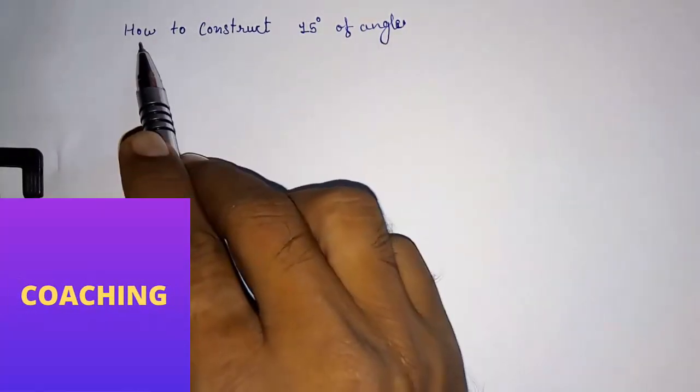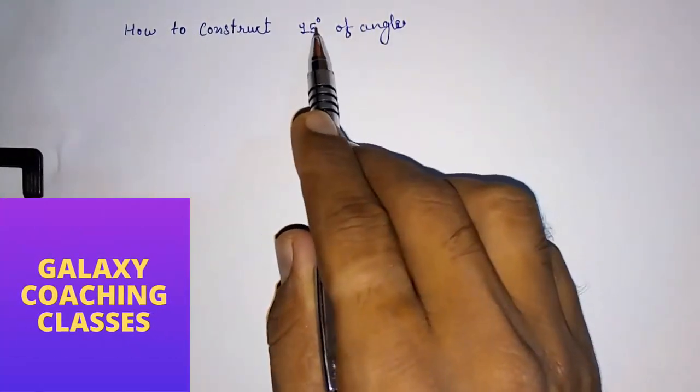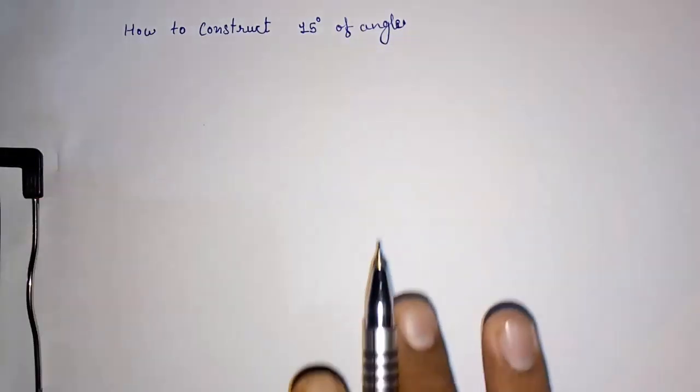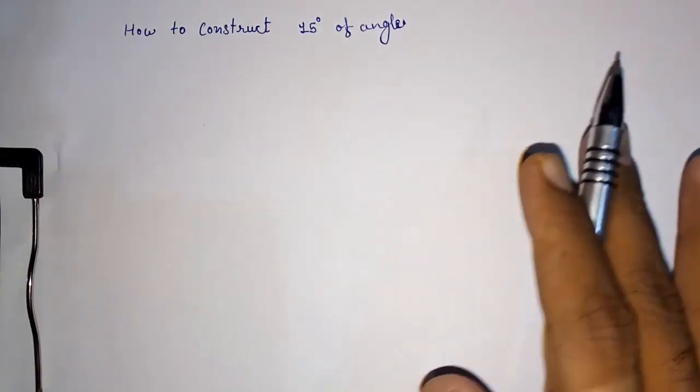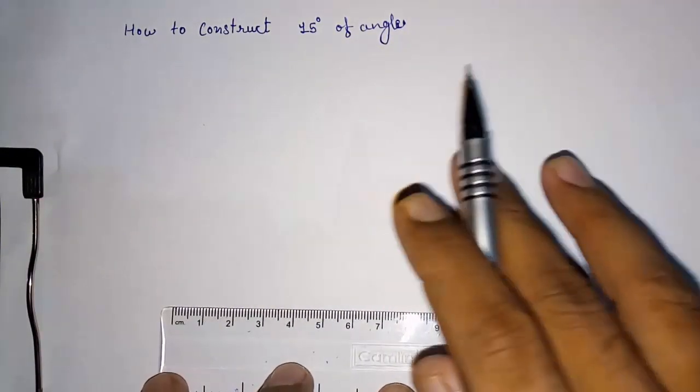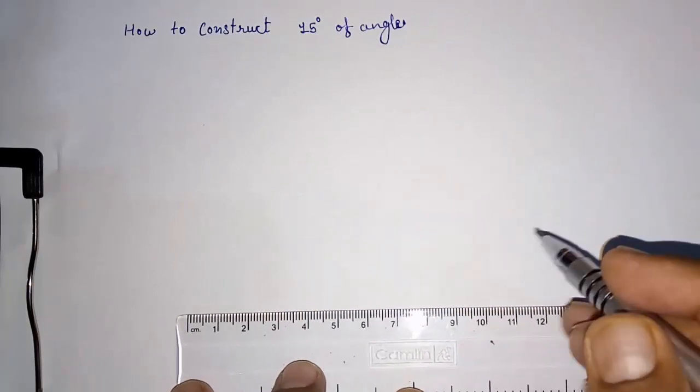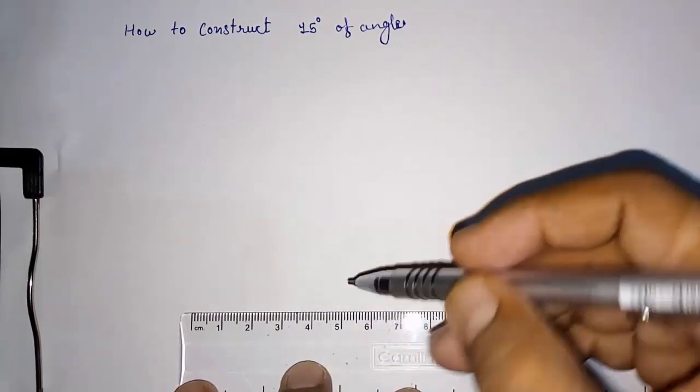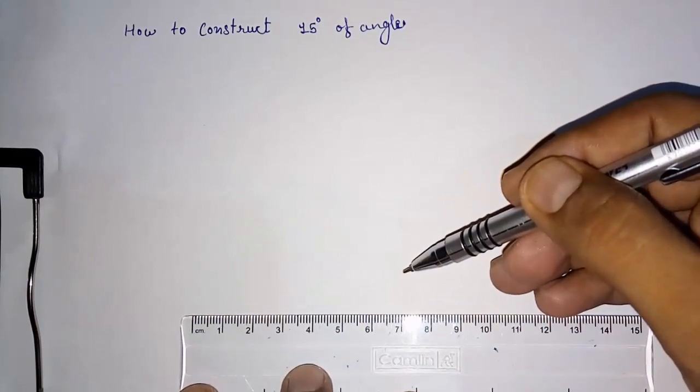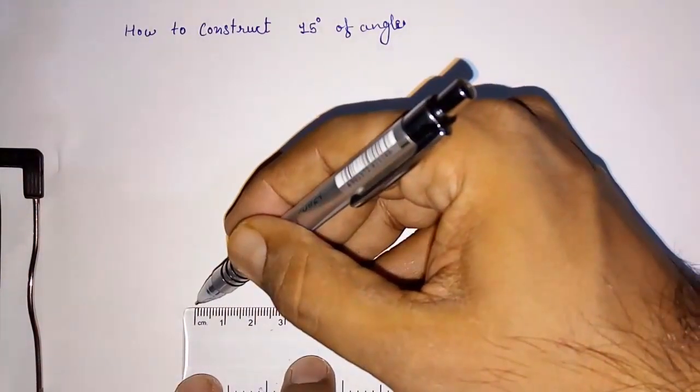Hello friends, today we're going to study how to construct a 15-degree angle without a protractor. I'm going to draw with pen because pencil is not that visible.